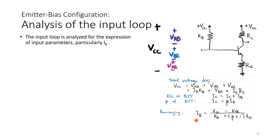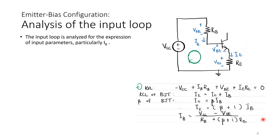An alternative way to see this is that the total voltage drops in series sum to VCC: VCC = VRB + VBE + VRE. Applying KCL at the BJT and substituting IC = β·IB, you can rearrange to get the same expression for IB. It does not matter which approach you use. Since I have been starting with KVL, I will stick with that method.